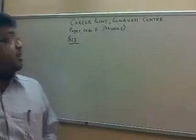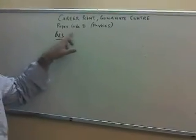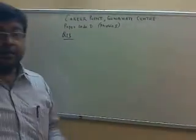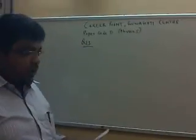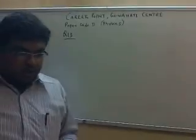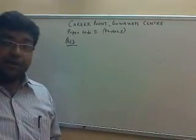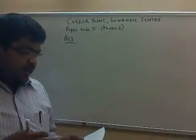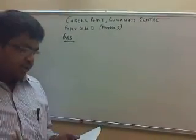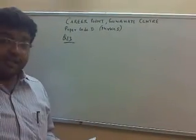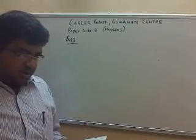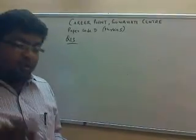We will discuss question number 13, paper code B, which we have discussed in this paper. You have a graph for a discharging RC circuit and time constant.